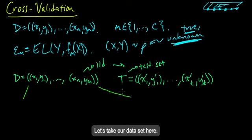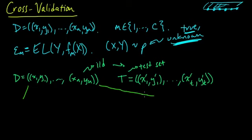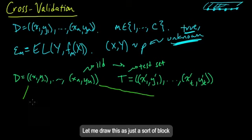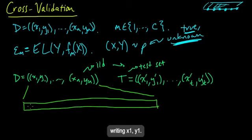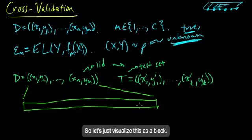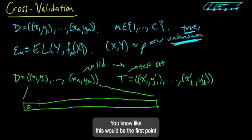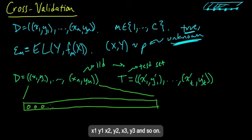Let's take our data set here. And let me draw this as just a sort of block. So I don't have to keep writing X1, Y1. So let's just visualize this as a block. Like this would be the first point: X1, Y1, X2, Y2, X3, Y3, and so on.